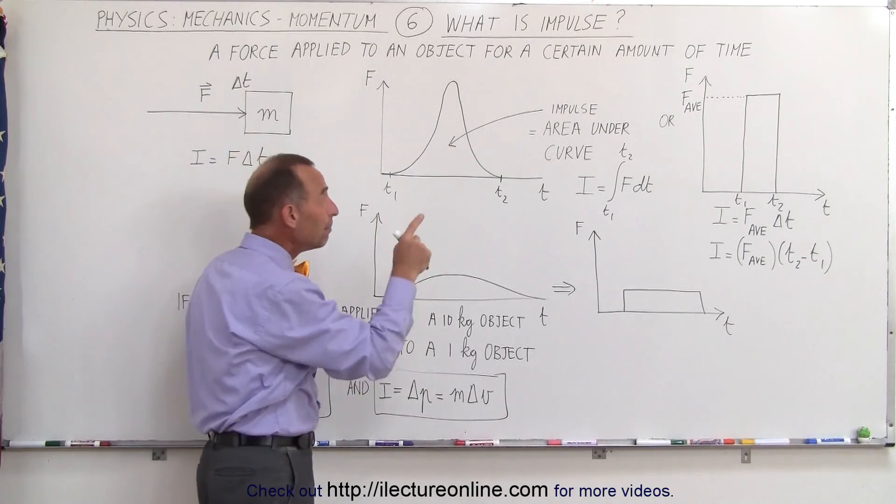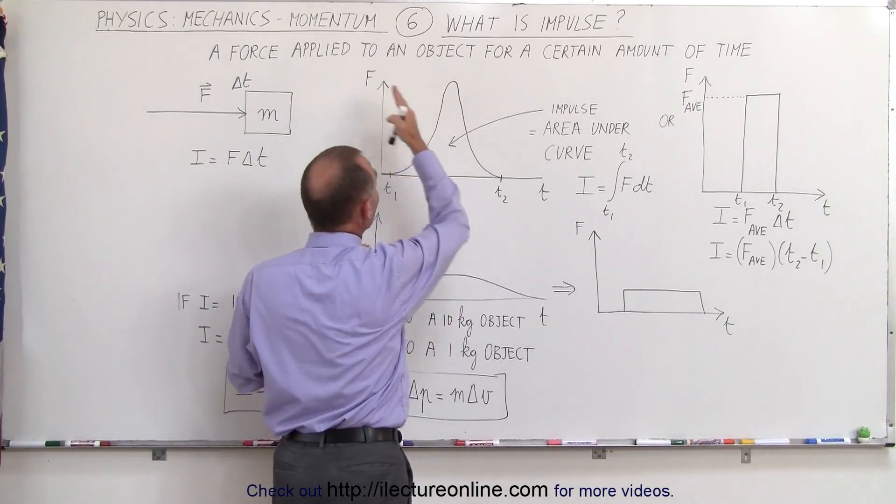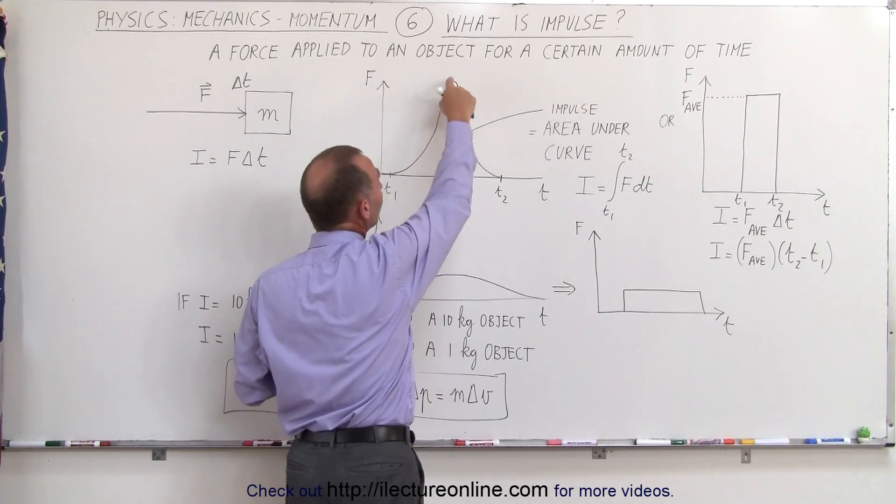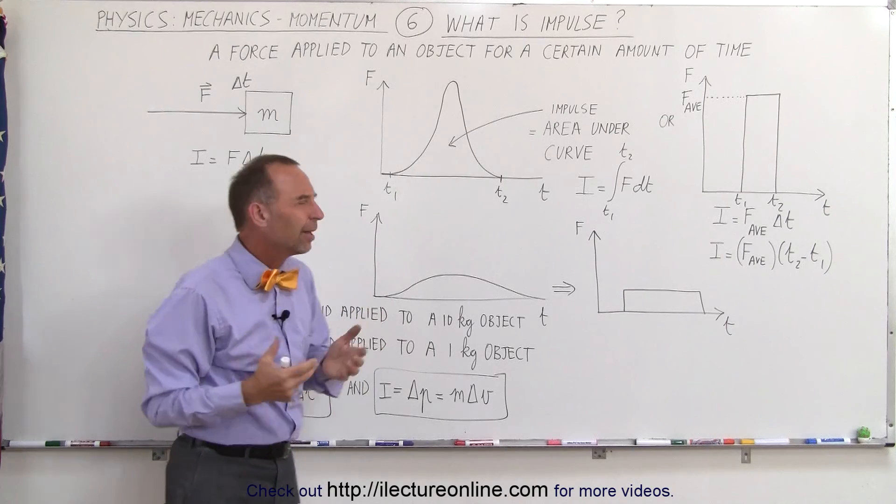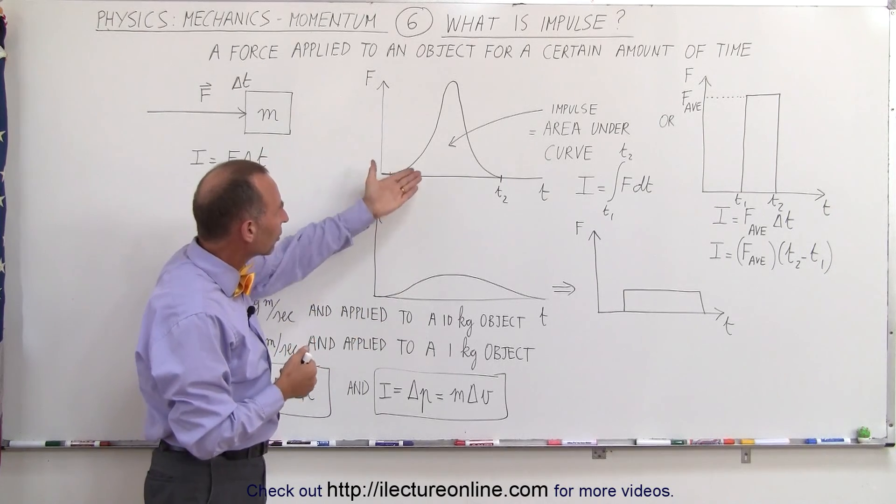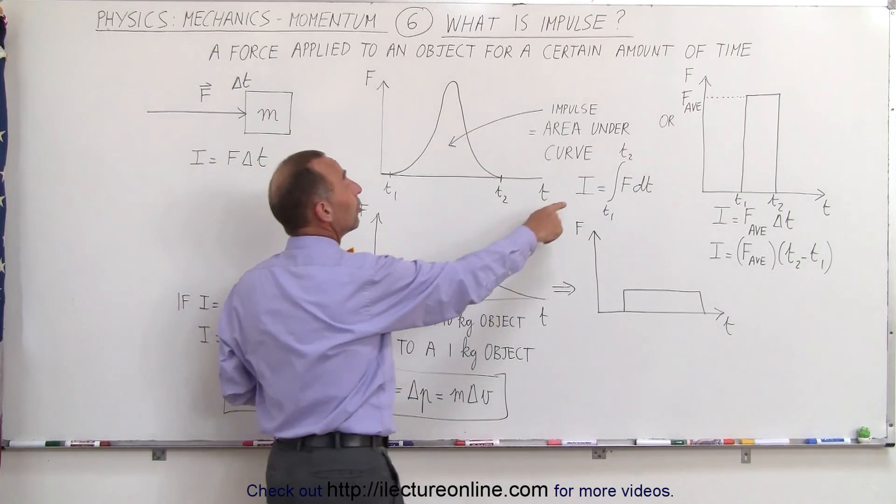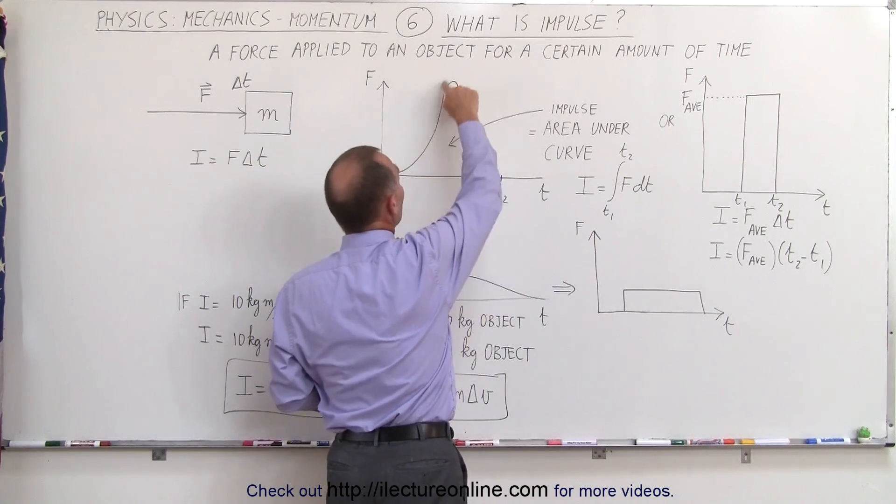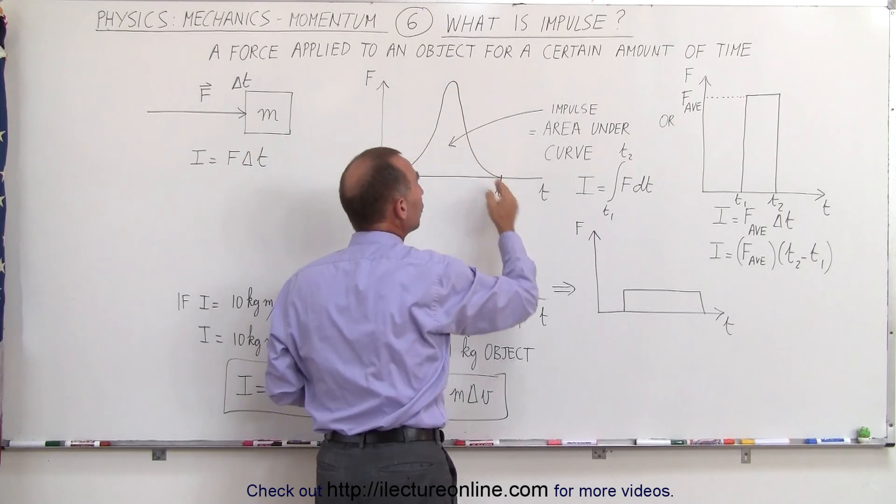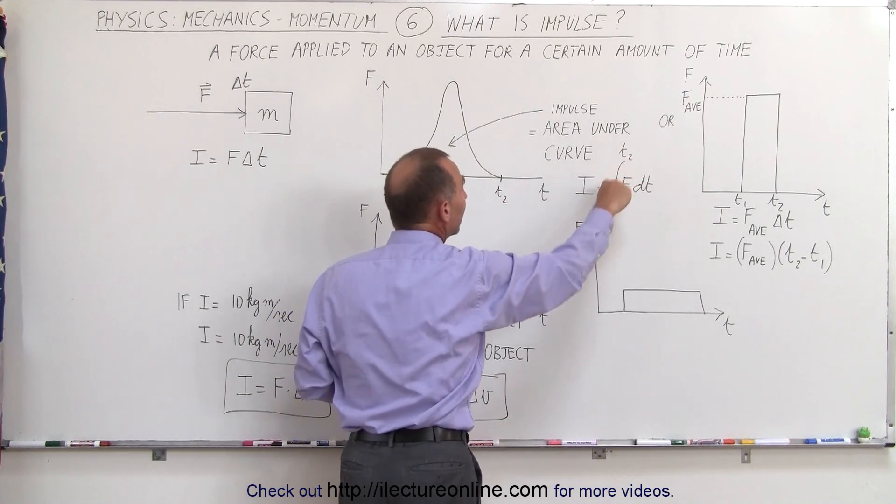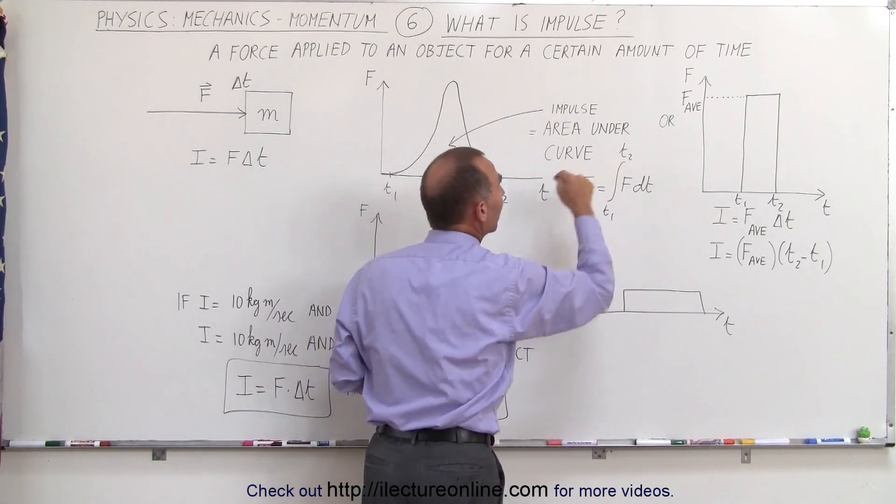It turns out that the impulse is equal to the product of the force times the time, or we can say it's also equal to the area underneath this curve. Now you say, well, how do I calculate the area underneath the curve like that? Well, using some calculus, we can say that the impulse is equal to the integral of the force. So now, of course, we would need a function describing this force from T1 to T2. If we could do that, then we can integrate over that time period from T1 to T2, and that would give us the impulse.